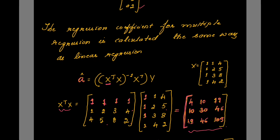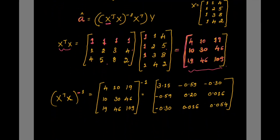Whatever you got is the product of X transpose into X. The next step is to take the inverse of this matrix. So take the inverse of the 3×3 matrix you just computed. Computing the inverse of a 3×3 matrix is more involved than a 2×2. Once you compute the inverse, you will get the corresponding values.